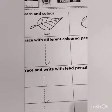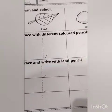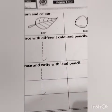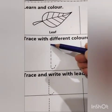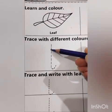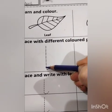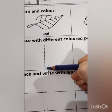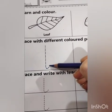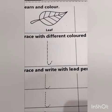Next question is trace with different colored pencils. Now you have to trace with three different colored pencils. Start from the arrow, come downwards and make a hook. What is this? L. Students, likewise, you have to trace with three different colors.